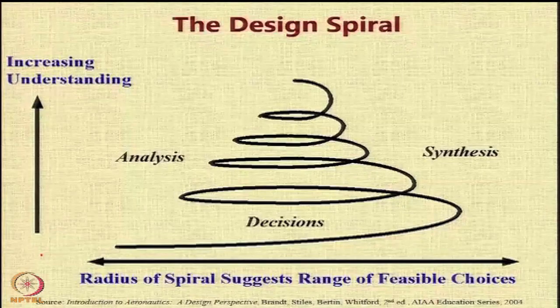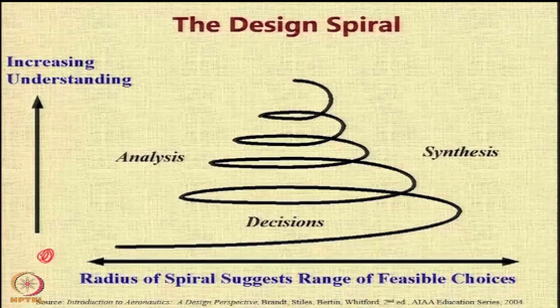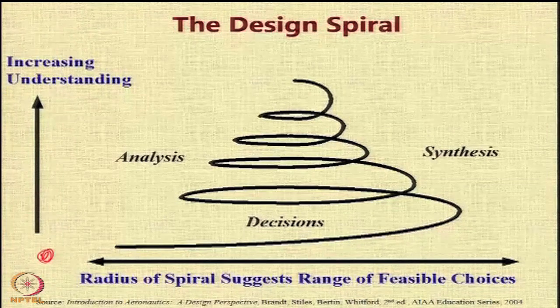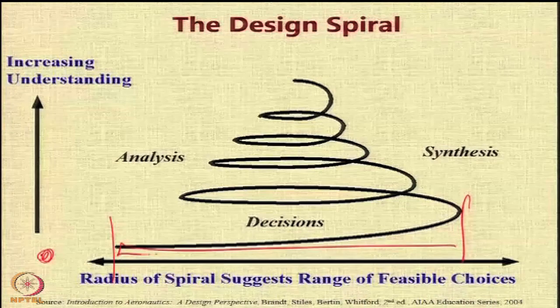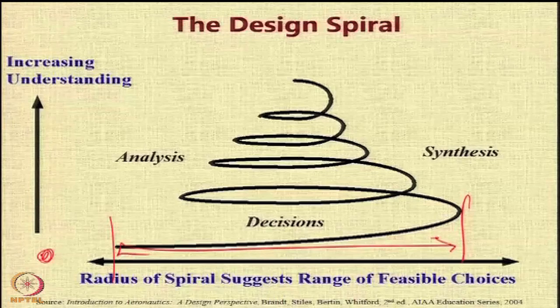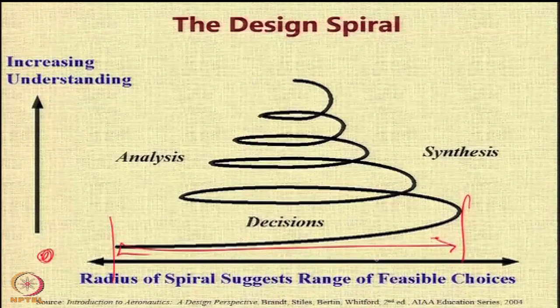Let me illustrate with more information. When you start the process, your understanding is almost zero because you are at the beginning. You can take virtually any decision. The radius of the spiral represents the range of feasible choices available to you, and at the start that range is very large.